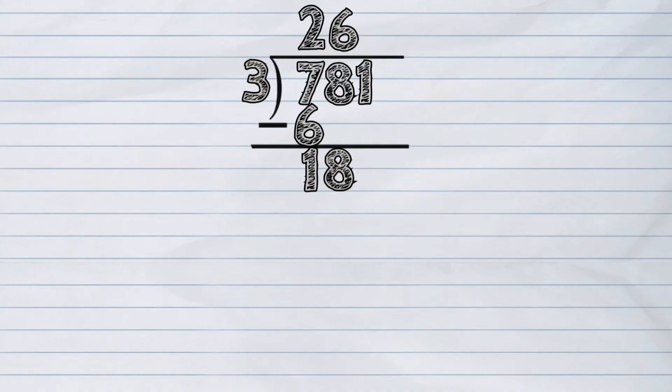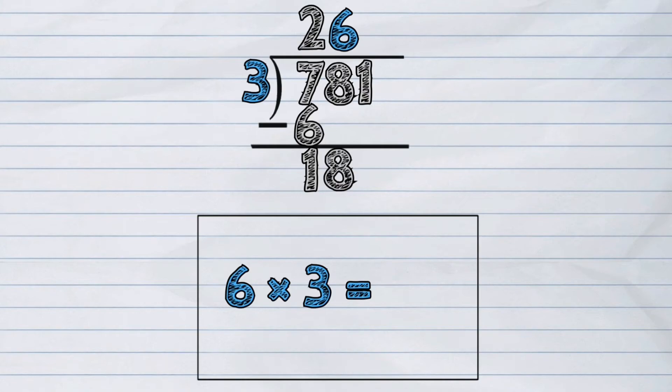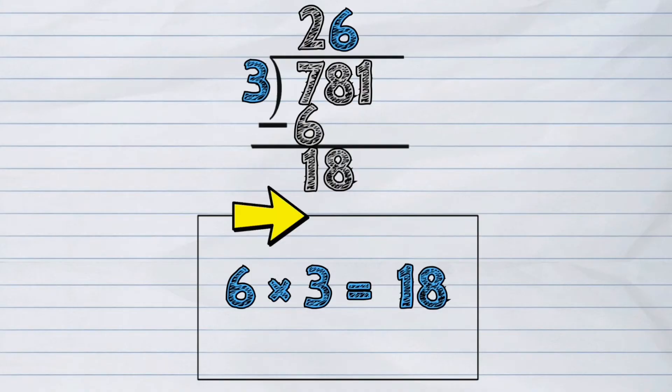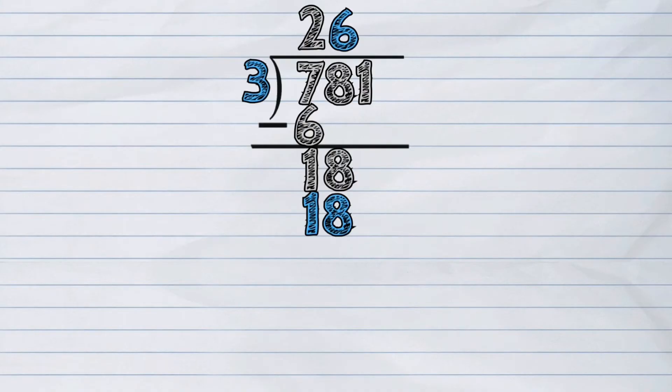Next, we have to multiply. Multiply 6 into our divisor, which is 3. 6 times 3 is 18. We write the answer below 18. Then, we will do again the subtraction. 18 minus 18. The answer is 0.